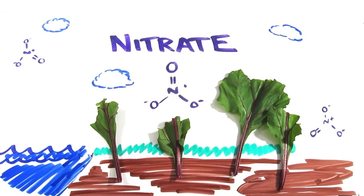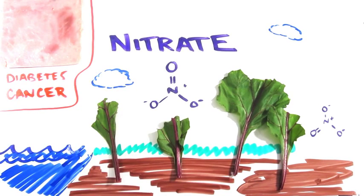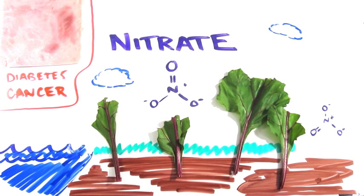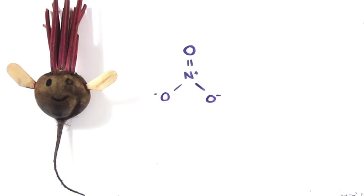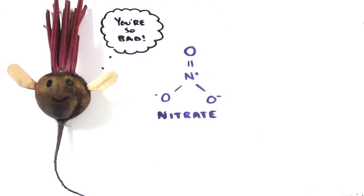They're also used as food preservatives in things like processed meats, which have been linked to serious conditions such as diabetes and cancer. Beetroot contains large amounts of these nitrates, but didn't we just explain that nitrates can be bad?